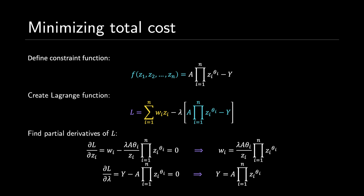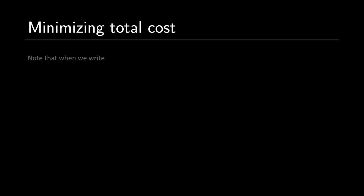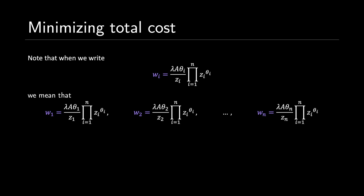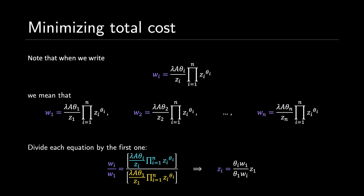Next we find each z sub i term in terms of z sub 1 and the other constants. We write out individual equations for w sub 1 through w sub n, then divide each by the first equation. After canceling terms, we get z sub i equals theta sub i times w sub 1 over theta sub 1 times w sub i, multiplied by z sub 1. Note this equality holds when i equals 1, since z sub 1 times (theta sub 1 times w sub 1 over theta sub 1 times w sub 1) simplifies to z sub 1.